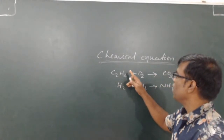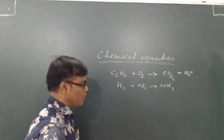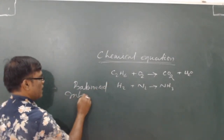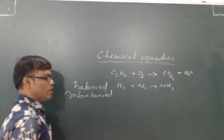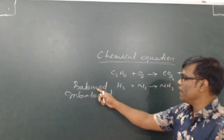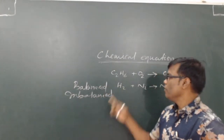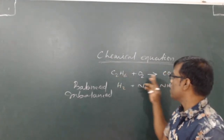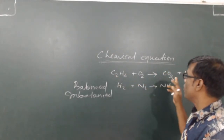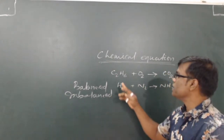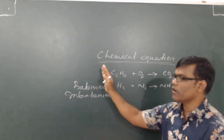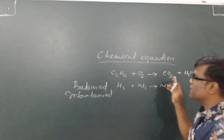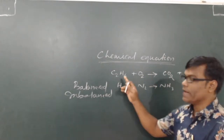Chemical equations are of two types: one is a balanced chemical equation, and another one is an imbalanced chemical equation. Which one is a balanced chemical equation? When all the atoms on both sides of the chemical reaction are the same, then it is called a balanced chemical equation.